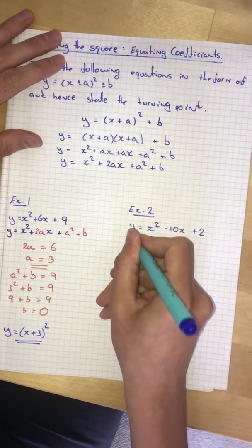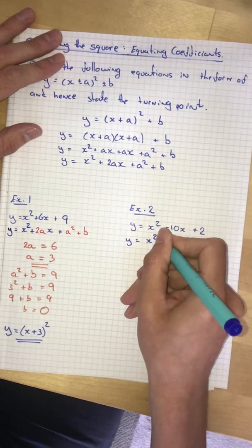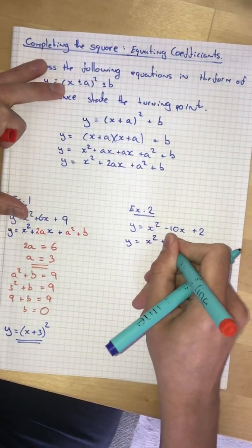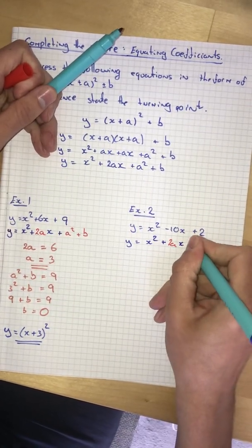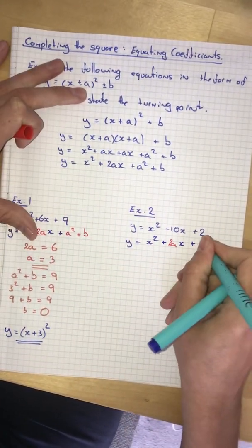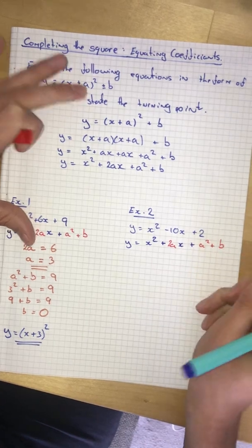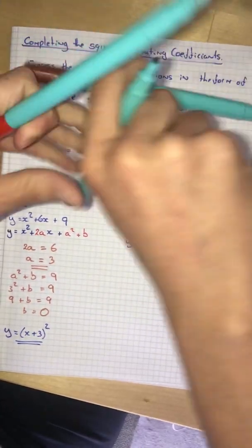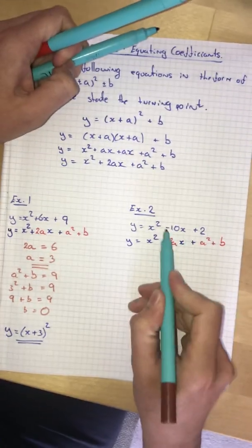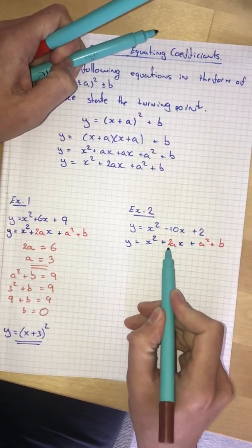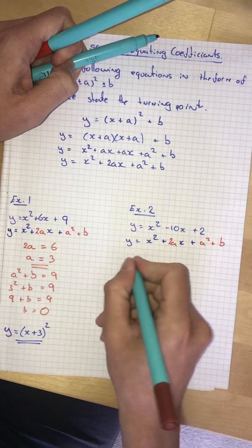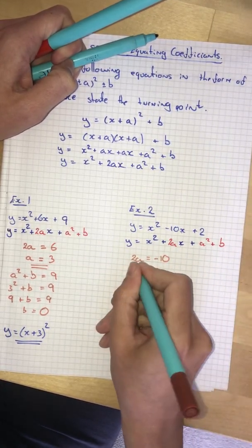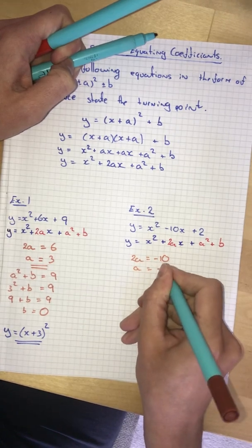I'll rewrite this. And that's equate the coefficients. Negative 10 is the coefficient of the x. 2a is the coefficient of the x. Which means that 2a equals negative 10. Which means a equals negative 5.